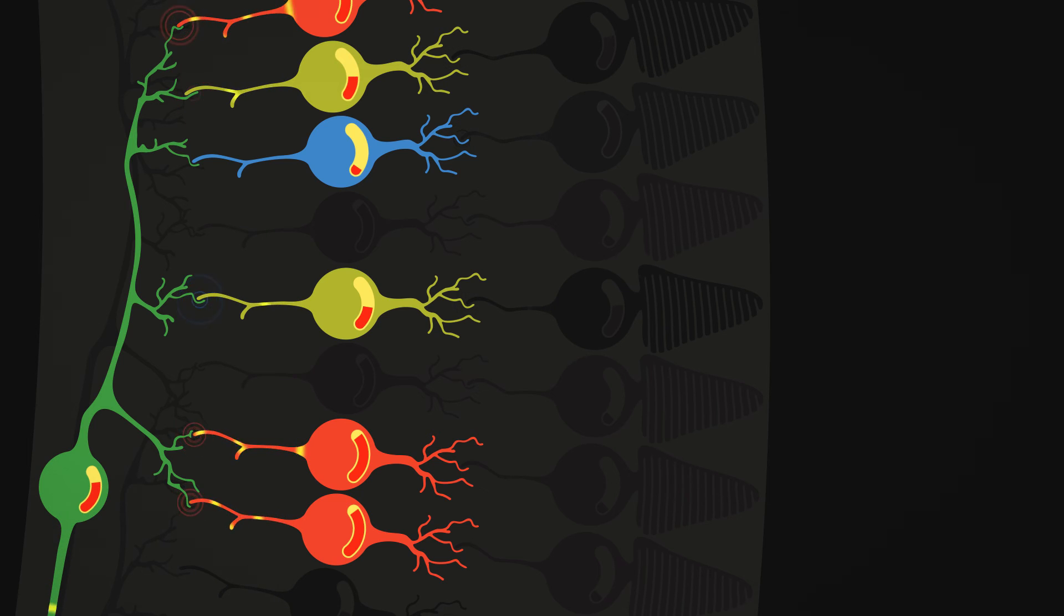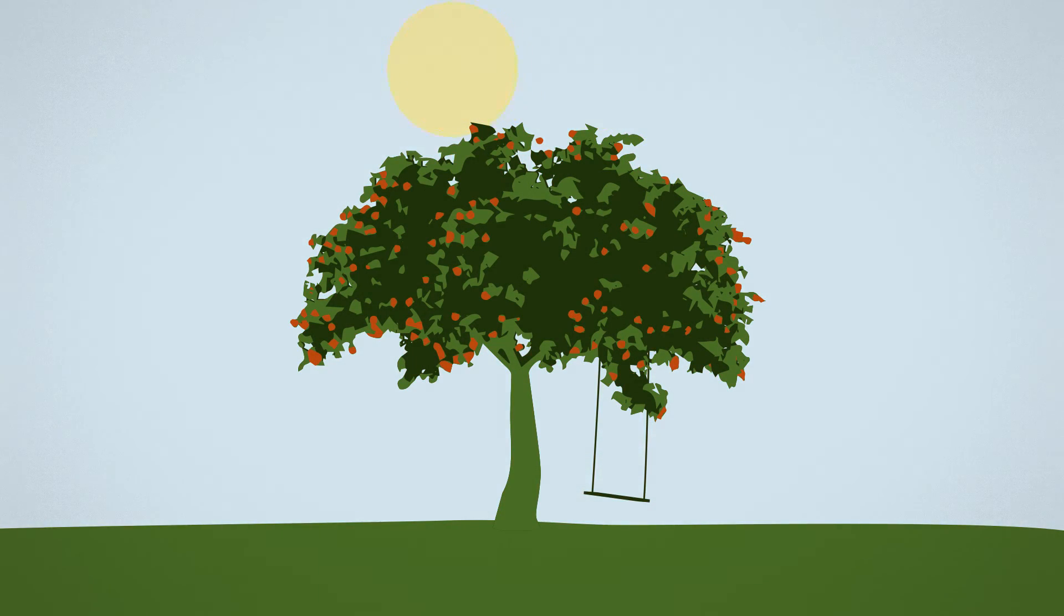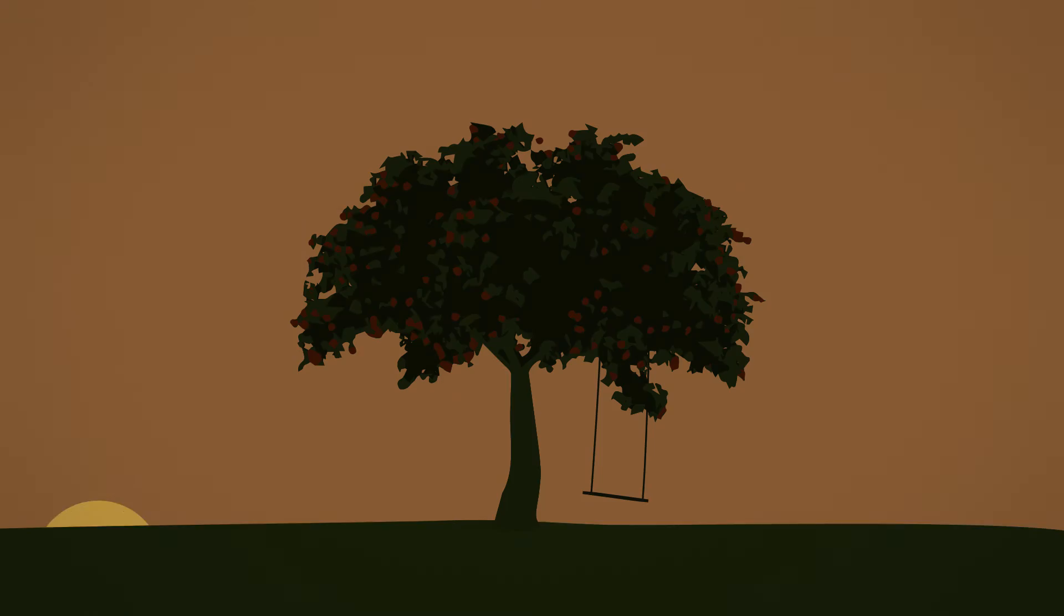We call this ingenious mechanism opponent processing, and it's why the color of objects appears not to change despite changing light throughout the day. But we digress.